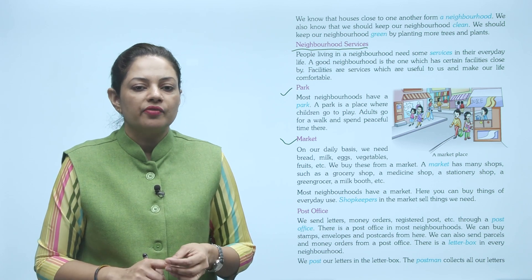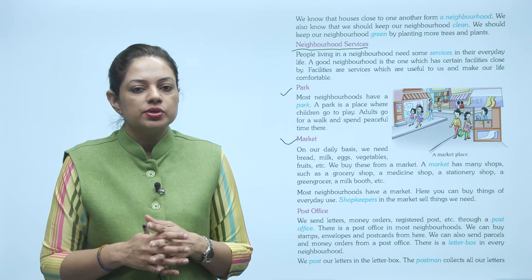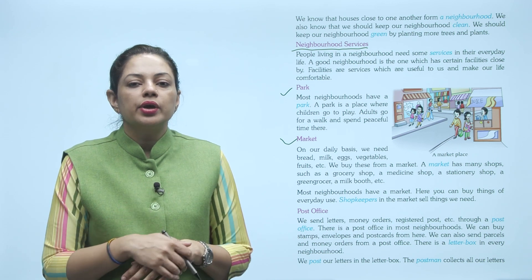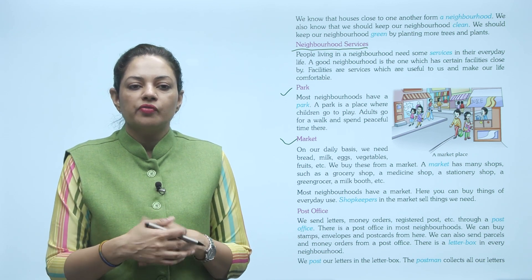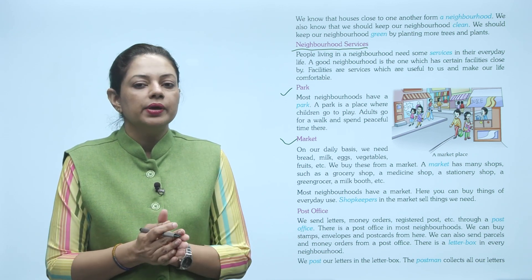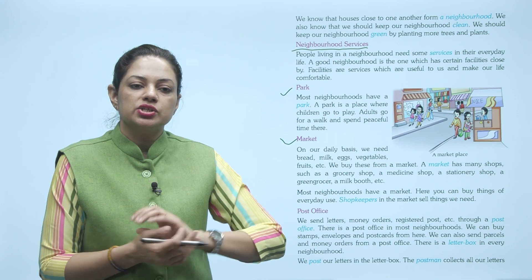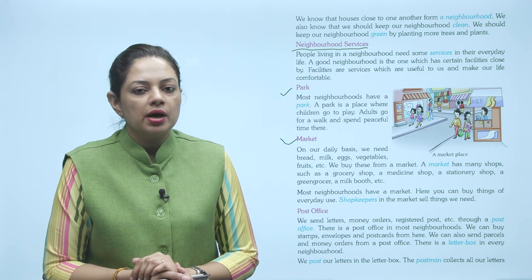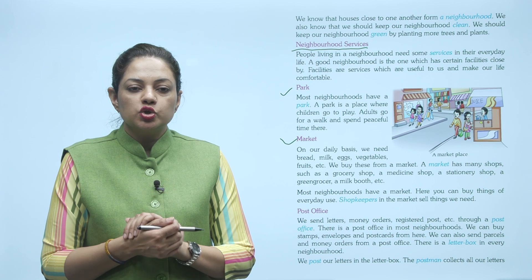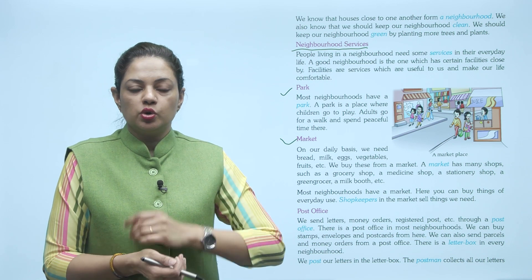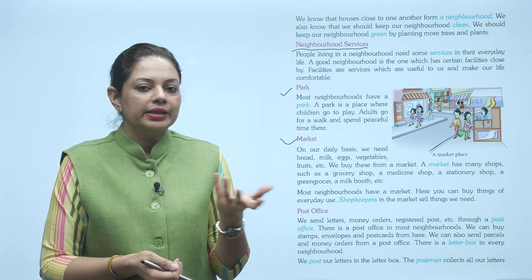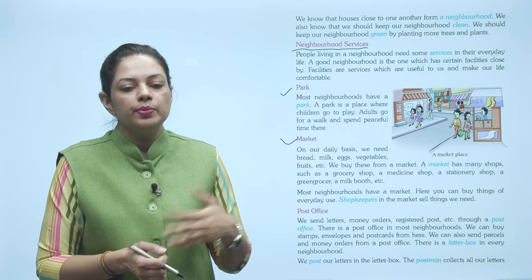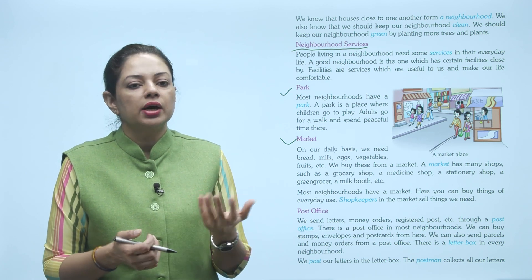Most neighborhoods have a market. Zyada tar neighborhoods mein market hote hain, bazaar hote hain. Here you can buy things of everyday use — yahan se hum jo bhi hamaari daily ki cheezein hain, woh khareed sakte hain. Shop keepers in the market sell things we need. Aur jo shops par jo hamein cheezein bechta hai, jo hamein deta hai — unko kehte hain shop keepers, yaani ki dukaandaar.